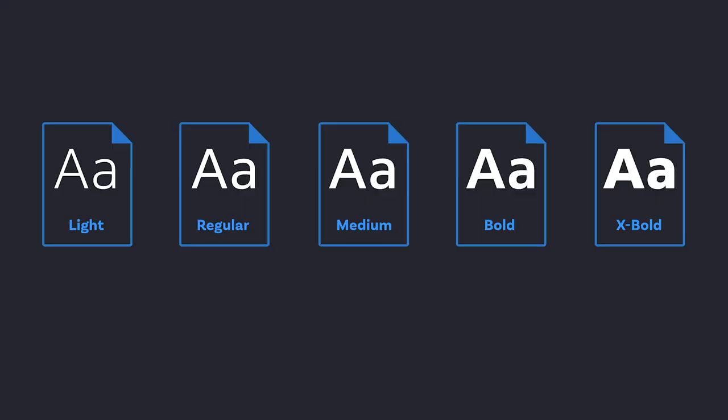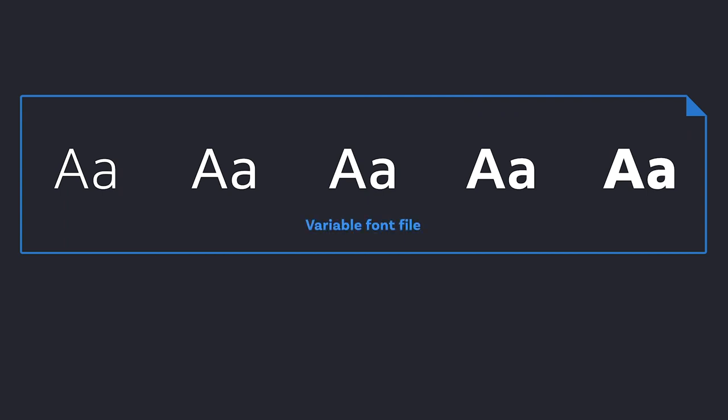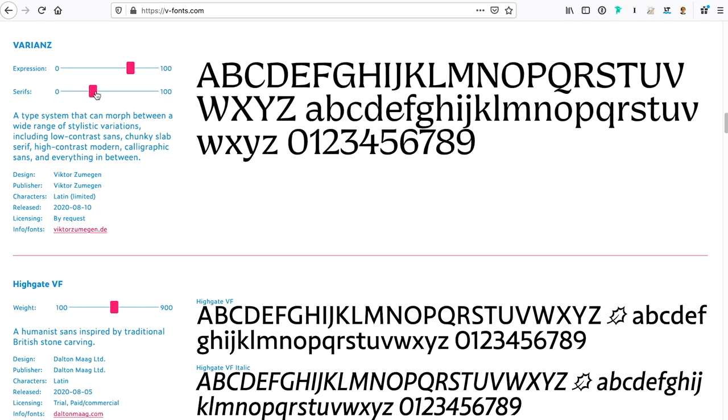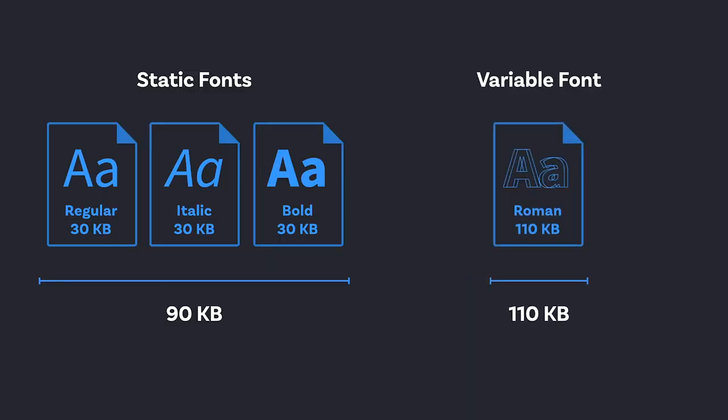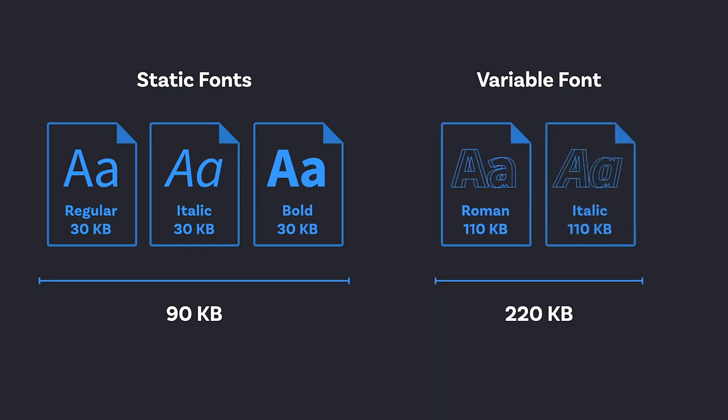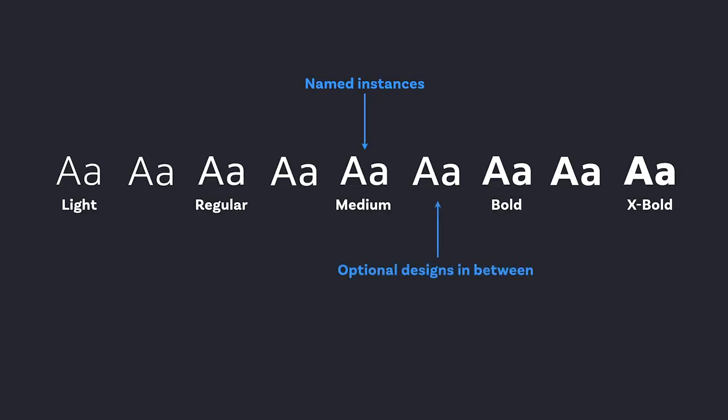Fourth, think about the format. Do you want a static font or a variable font? A variable font is one file that contains many different weights and styles, and the advantage is that you can seamlessly transition from one style to the next for micro-adjustments. It can also save on file size, since all the information is stored in one file. If you're using just one static weight it will likely be smaller, but if you're using two to three different weights or styles, the variable font will be smaller while providing much more design space. I did a talk about this at a conference — link is in the description below.